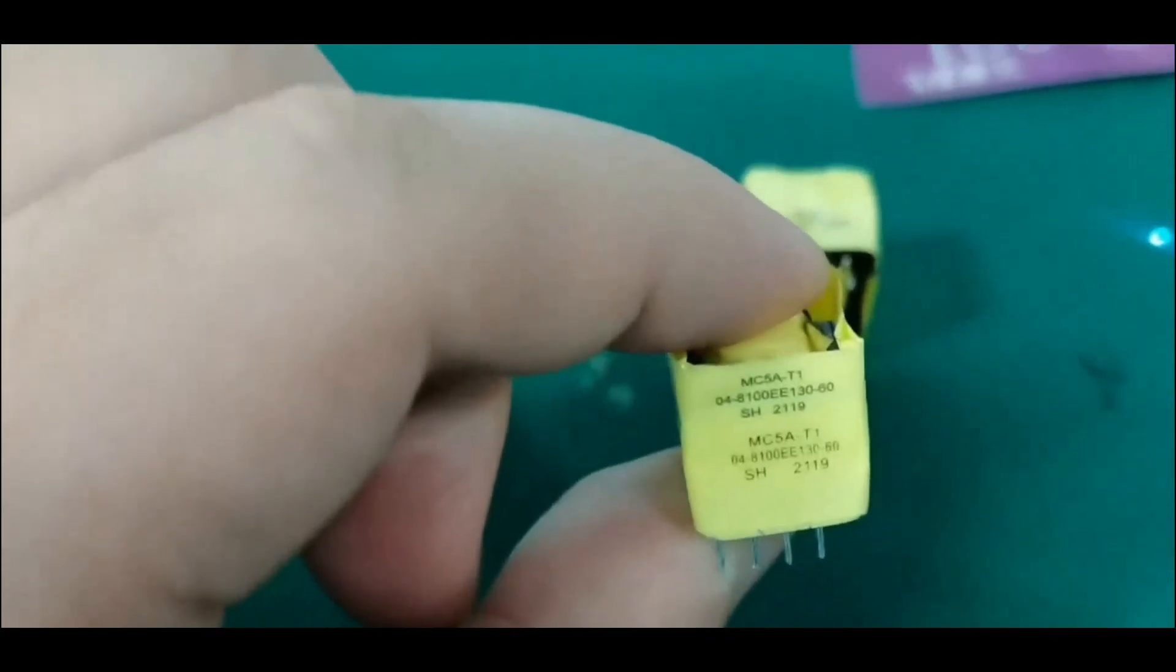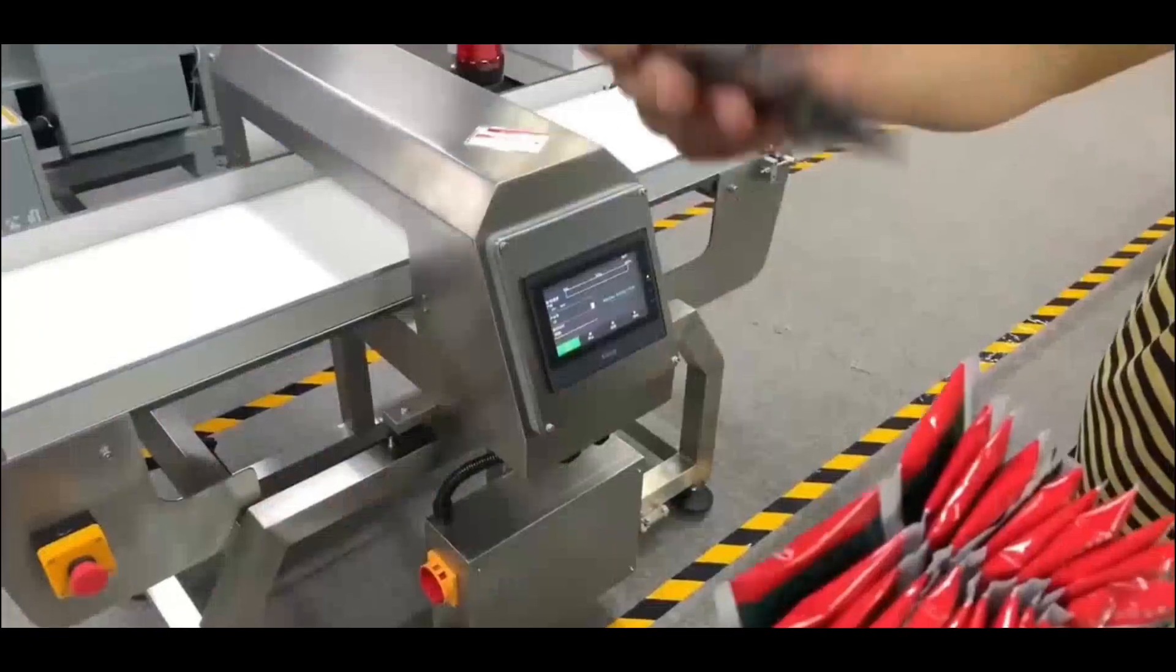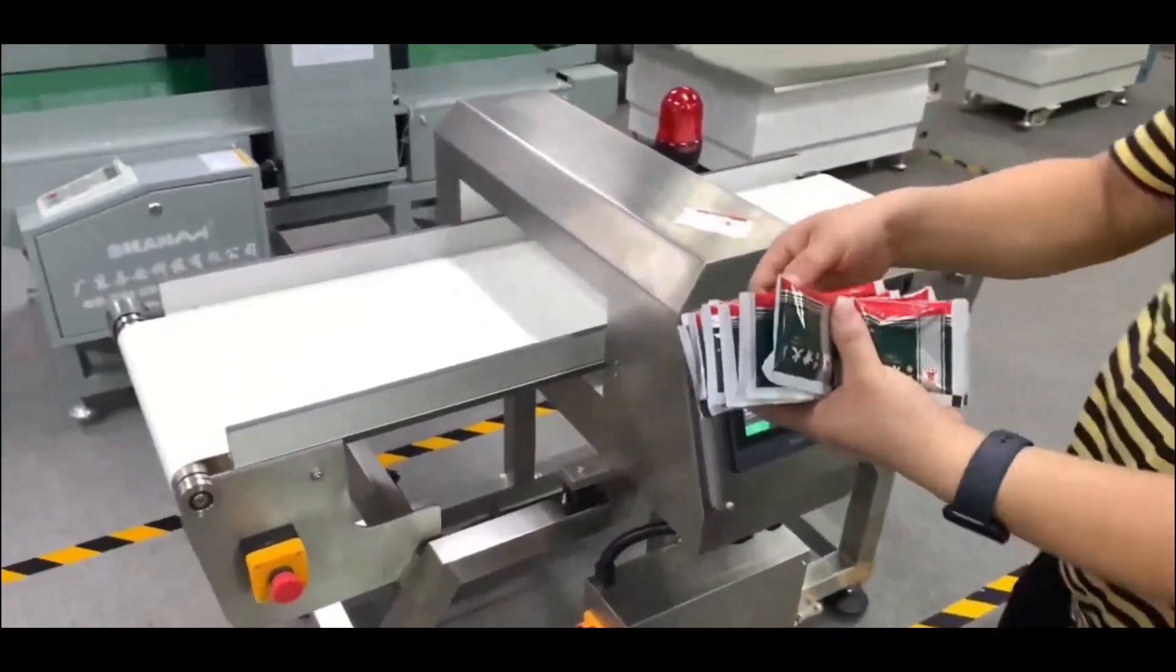For example, in the electronics industry, it can carry out fine marking of chips, capacitors, etc. to help identify model, specification and other information.